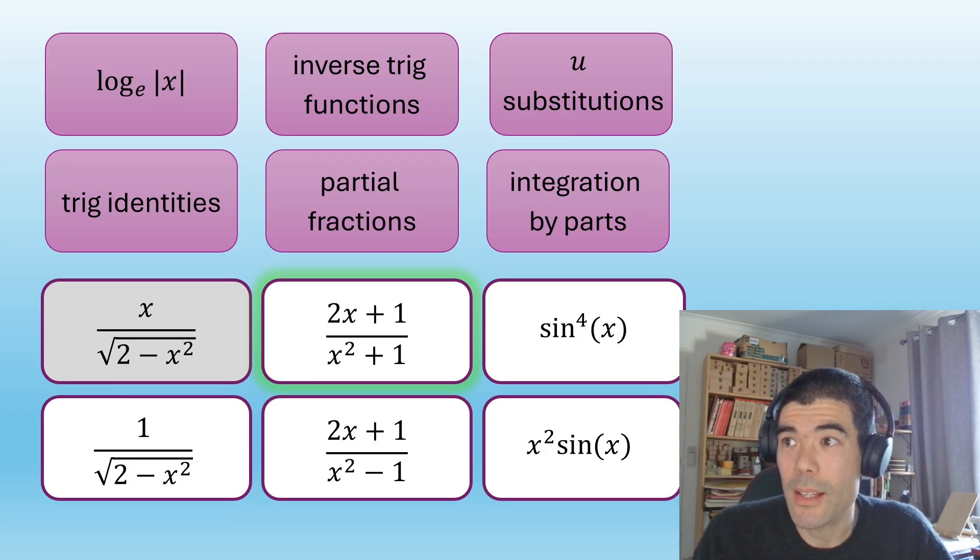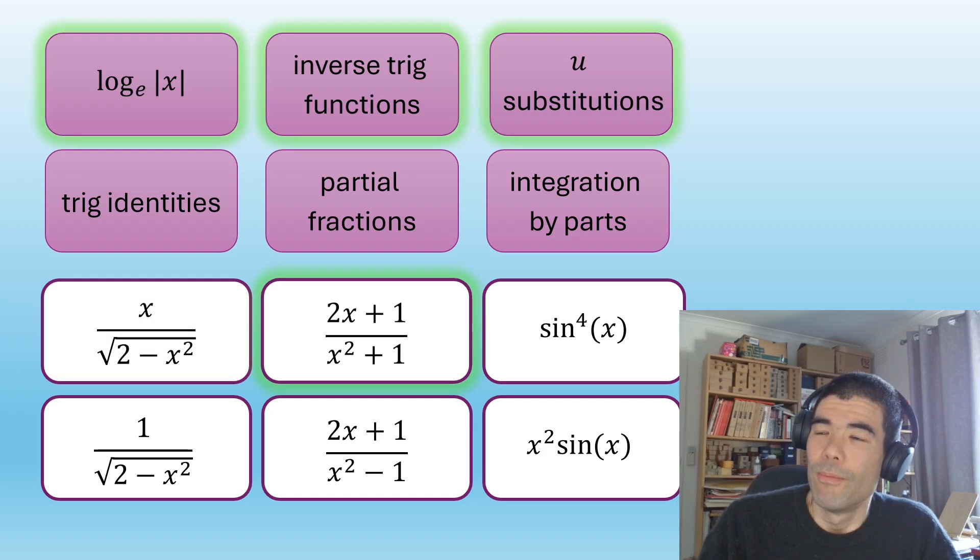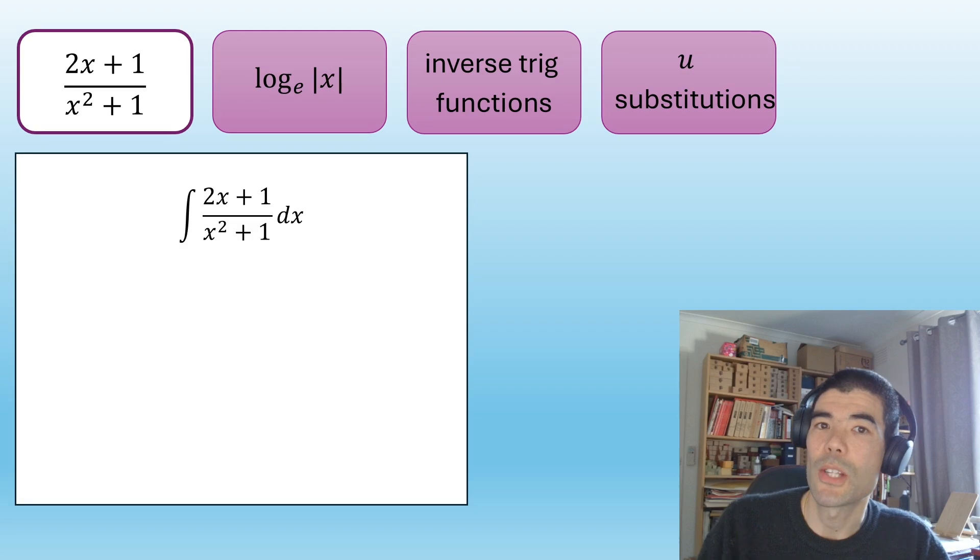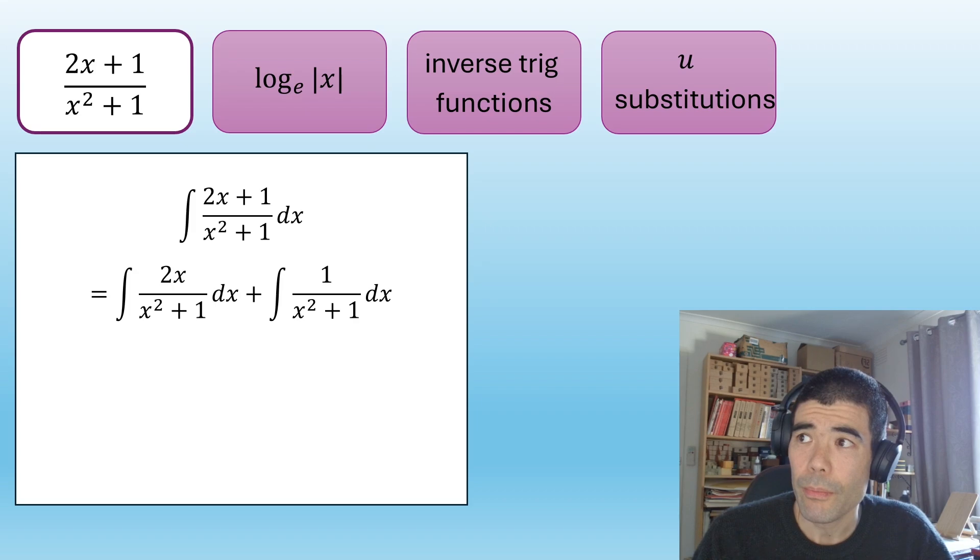All right. So we're going to look at this one next. Which of these techniques do you think would be right? In this case, it's actually all of those top three we're going to use. All right. So the first step we're going to do with something like this is we're going to split it up into the sum of two integrals. Okay. Just splitting up the denominator into 2x and then plus 1.